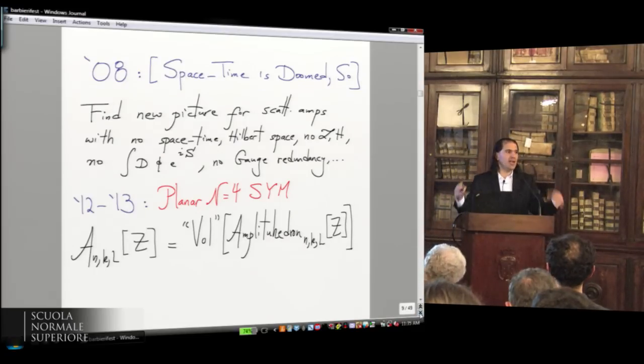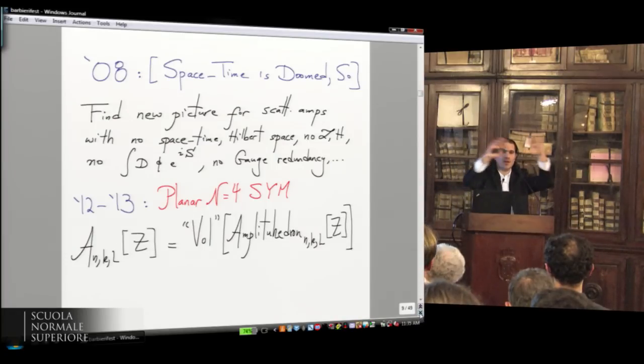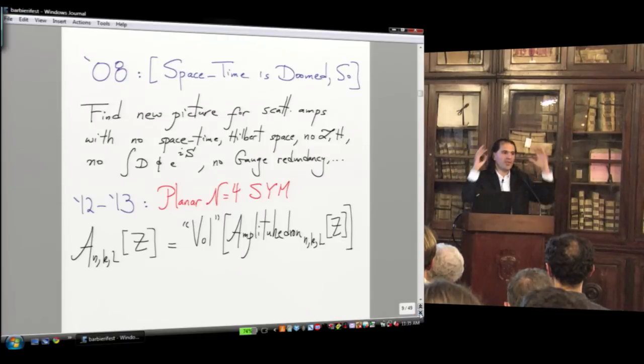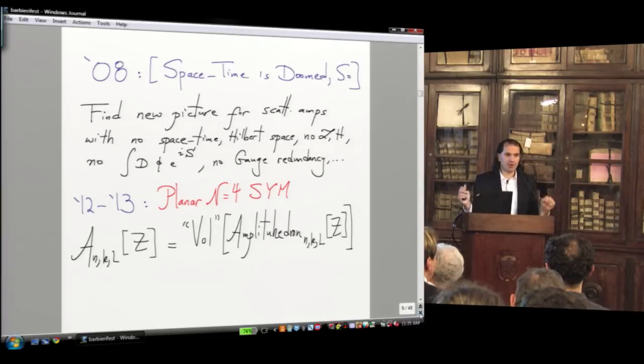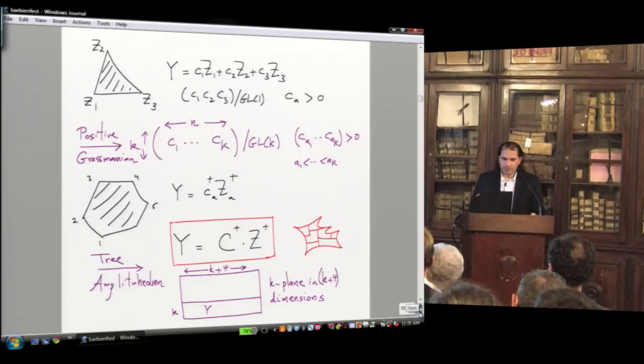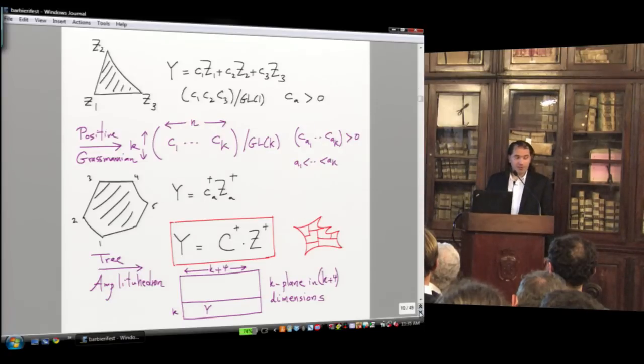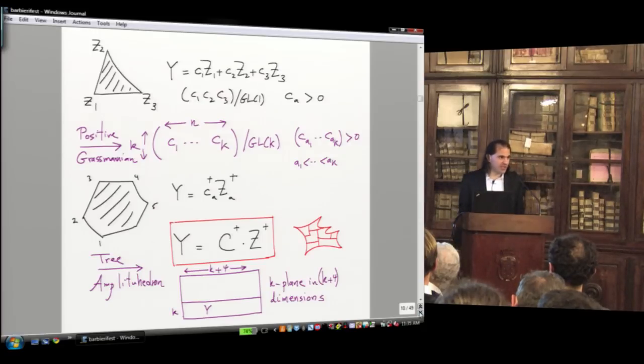And if you give the external kinematical data for the gluons, then the amplitude for N particles at L loops is in a specific sense the volume of a certain geometric object that lives in the space of K-planes in K plus four dimensions. This mathematical object, predecessors to this object, had been quite surprisingly studied by mathematicians in the last five, six years or so, associated with the word the positive Grassmannian. But the thing that actually gives you the full amplitude itself has so far not been studied by mathematicians, so we have to give it a new name, and this object we call the amplituhedron.